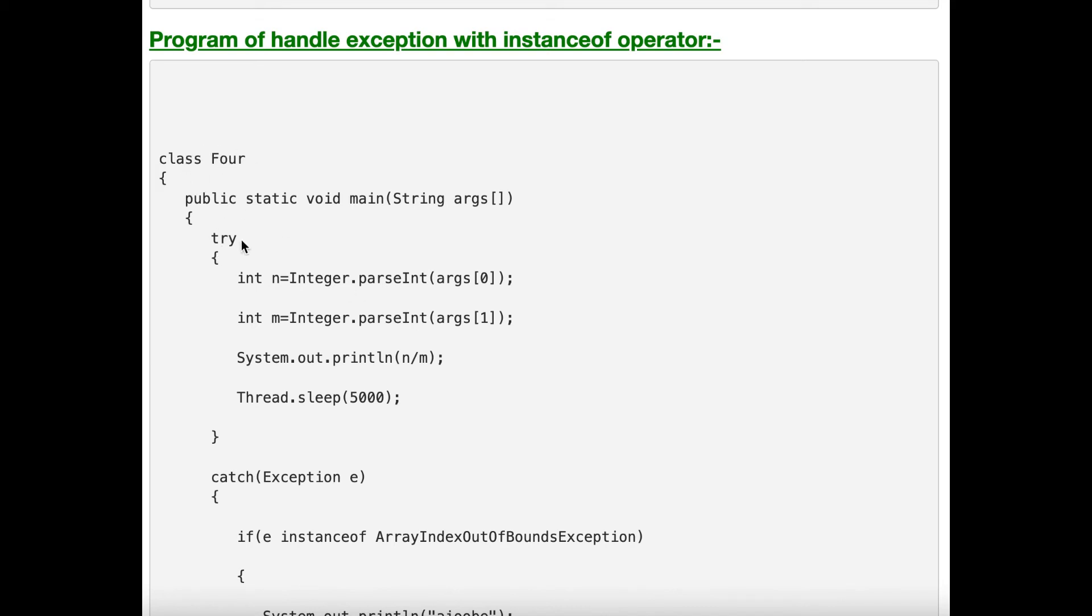In the main method we have taken try, and then we have int n equals Integer.parseInt, and we are passing argument zero. In the command line we will pass some data as an argument. Similarly, on index one we are taking m, and after that we are dividing n by m. Thread.sleep, we are giving five seconds.